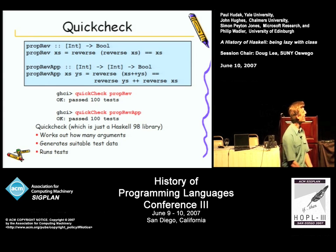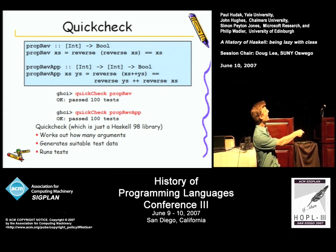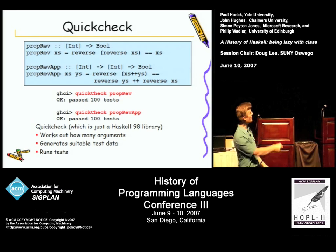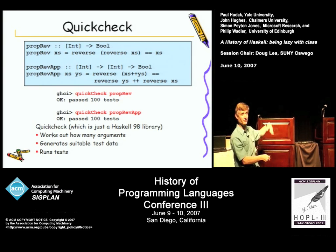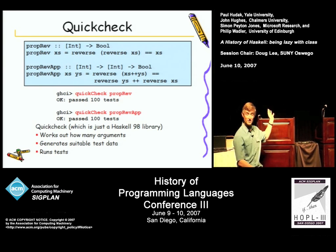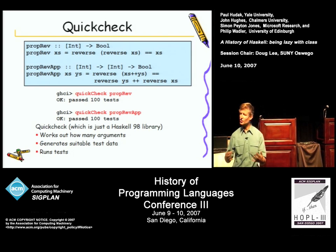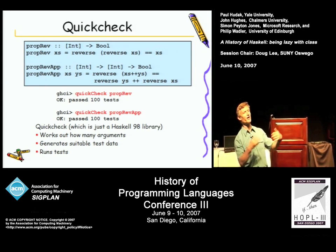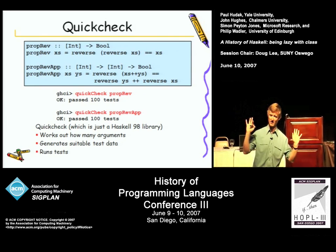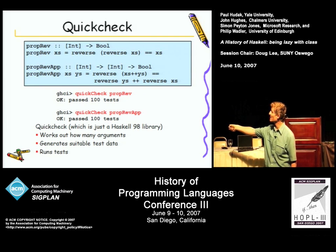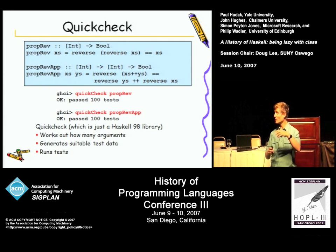The way it works is this: you have some function you've written, like reverse, and you wish to test some property of reverse. So the first thing you do is write a Haskell function — called proprev in this case — that takes a list of integers to a Boolean and returns true if, when you reverse the list of integers twice, you get the same thing as you started with. That should be a property that reverse has. And you can write lots of properties — here's a property involving reversing and appending.